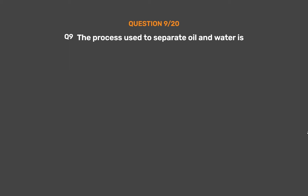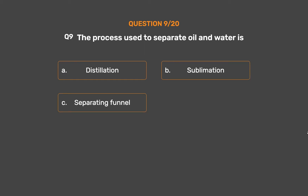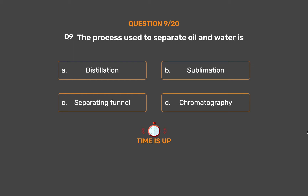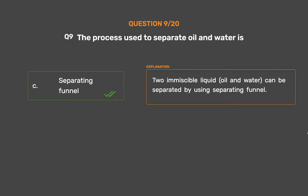Question number 9. The process used to separate oil and water is: Option A: Distillation. Option B: Sublimation. Option C: Separating funnel. Option D: Chromatography. The correct answer is Option C: Separating funnel. Two immiscible liquids — oil and water — can be separated by using a separating funnel.